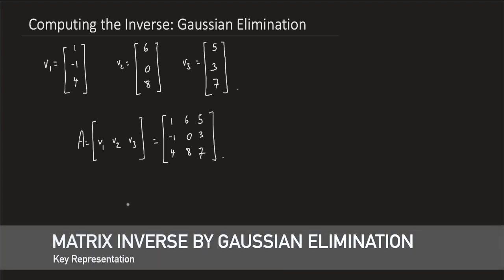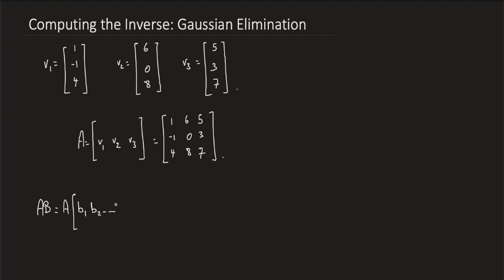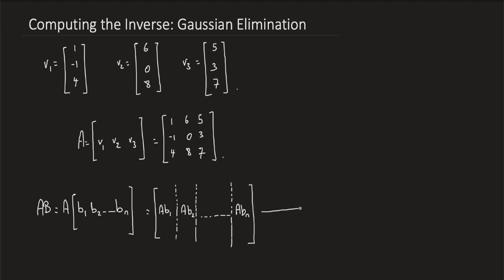Why is this useful? Well, if you're multiplying two matrices A and B, you can represent B as columns [B1, B2, ..., Bn], and hence the resulting matrix can be expressed as a matrix where the first column is A times B1, the second column is A times B2, down to the last column which is A times Bn.